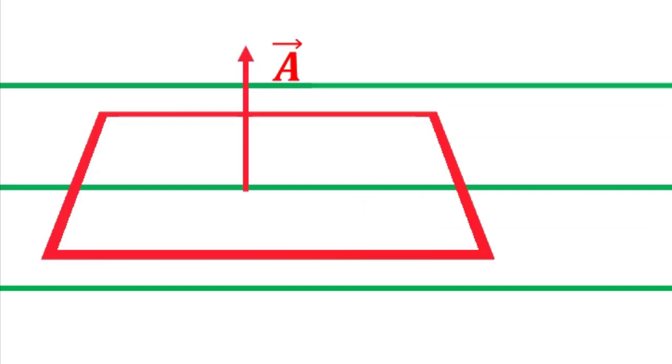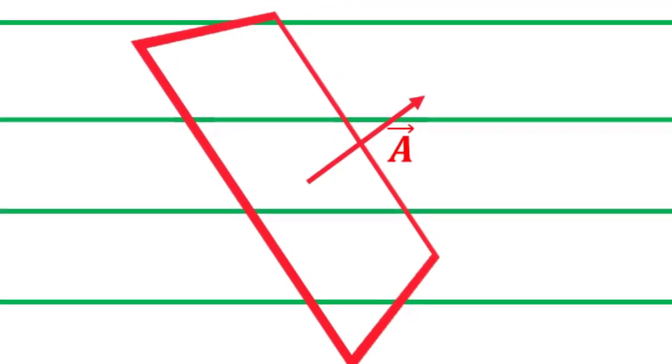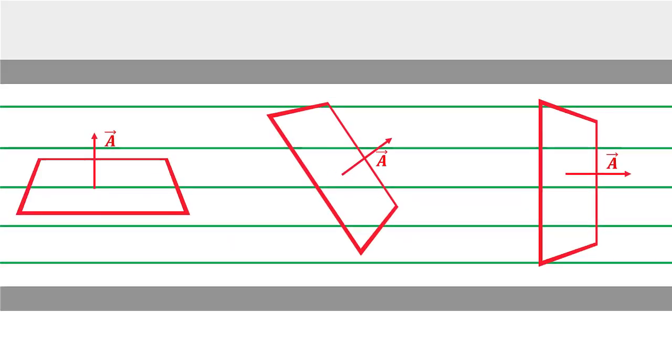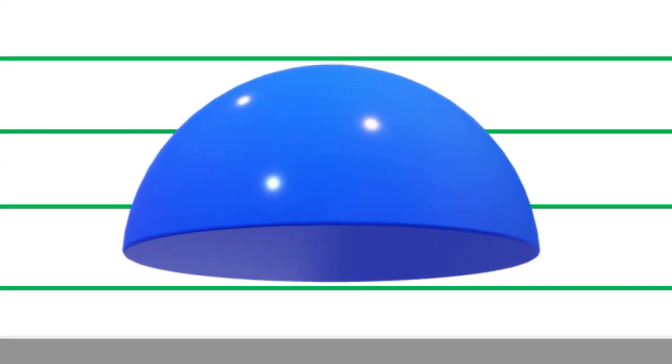How to specify the direction of the planar area? Clearly, normal to the plane specifies the orientation of the plane. Thus, the direction of the planar area vector is along its normal.